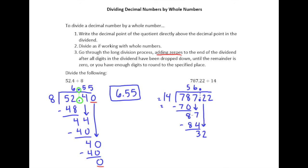Now we drop down the 2. 14 goes into 32 twice. 2 times 14 is 28. I have a 4. And then we drop down our 2. 14 goes into 42 actually exactly 3 times. Because 3 times 14 is 42. So we have a remainder of 0.